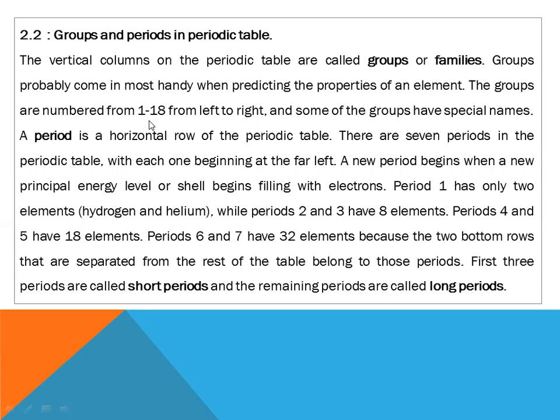Groups 3 to 13 are d block elements. Groups 14 to 18 are p block elements, labeled 3A to 8A. Groups 3A to 6A do not have a specified collective name — their first member gives the family name: boron family, carbon family, nitrogen family, and oxygen family. Group 7A is the halogens and group 8A is the noble gases.